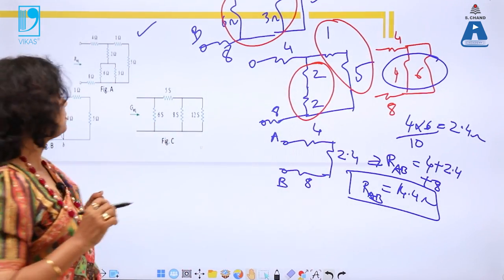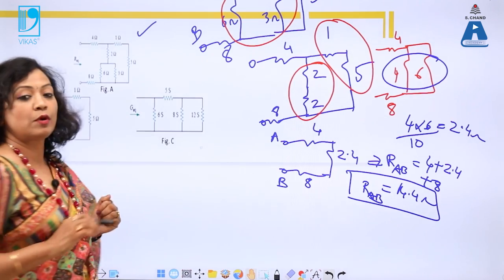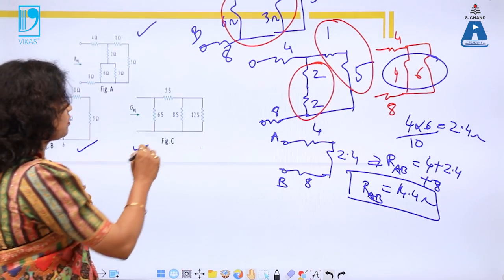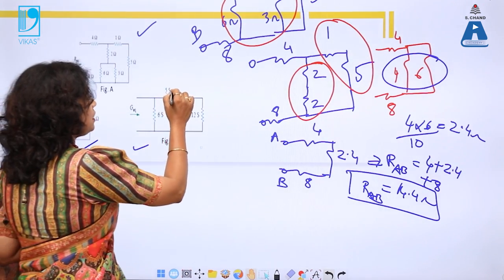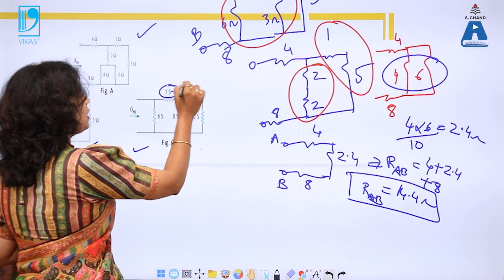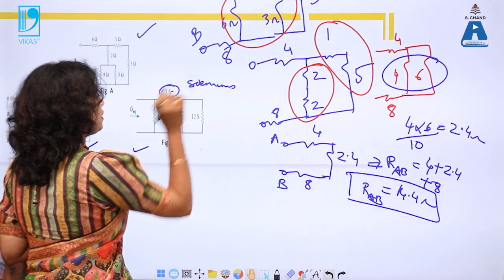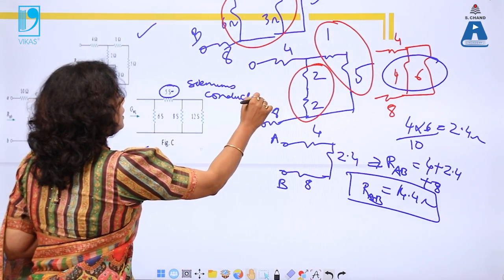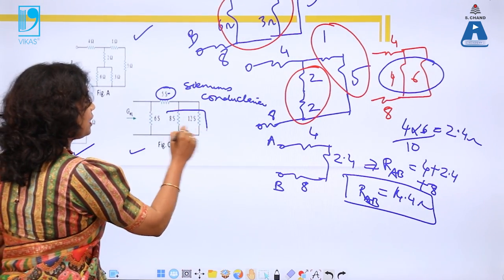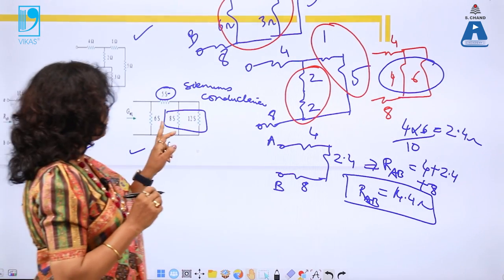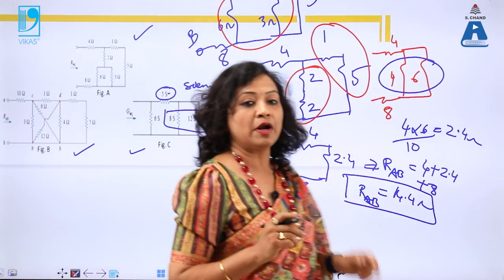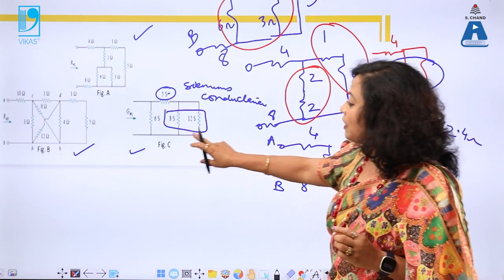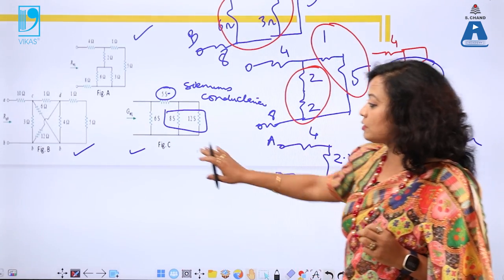This is how we solve series-parallel resistance problems to find total resistance. You can practice the next question — a hint: all resistances are in Siemens, which means conductance. In parallel, conductances are added directly; in series, we use the product-over-sum method. Using the concept of conductance, find the total conductance between terminals A and B.